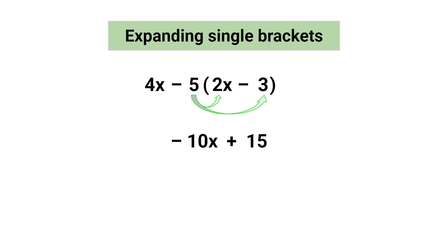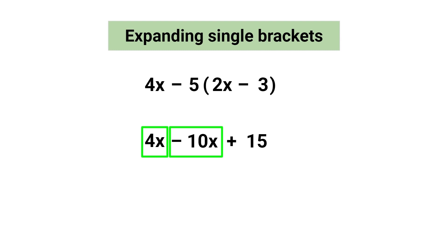Now that the brackets have been properly removed, let's bring the term 4x down to complete the calculation. Remember, we can only combine terms with the same variable and the same exponent. The terms 4x and 10x are like terms, so 4x minus 10x equals negative 6x. Bringing down the remaining term 15, we have no more like terms, so the expression has been simplified to negative 6x plus 15.